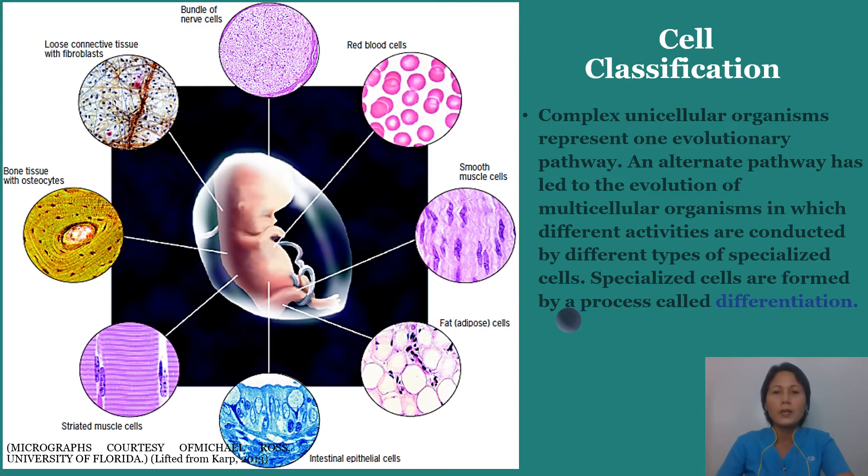Some cells become part of a particular digestive gland, others part of a large skeletal muscle, others part of a bone, and so forth. The pathway of differentiation followed by each embryonic cell depends primarily on the signals it receives from the surrounding environment. These signals, in turn, depend on the position of the cell within the embryo. As a result of differentiation, different types of cells acquire a distinctive appearance and contain unique materials. Despite their many differences, the various cells of the multicellular plant or animal are composed of similar organelles.